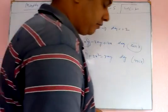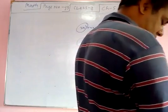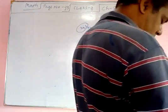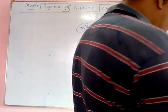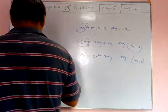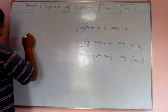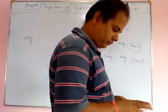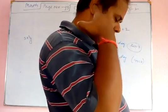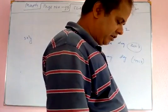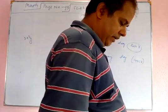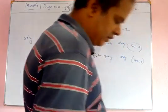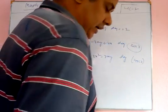Example number 4: Name the following expressions on the basis of number of terms and degree of the polynomial. First, 5x²y: the number of terms is 1, so this is a monomial; the degree is 2 plus 1 equals 3, so this is a cubic polynomial.